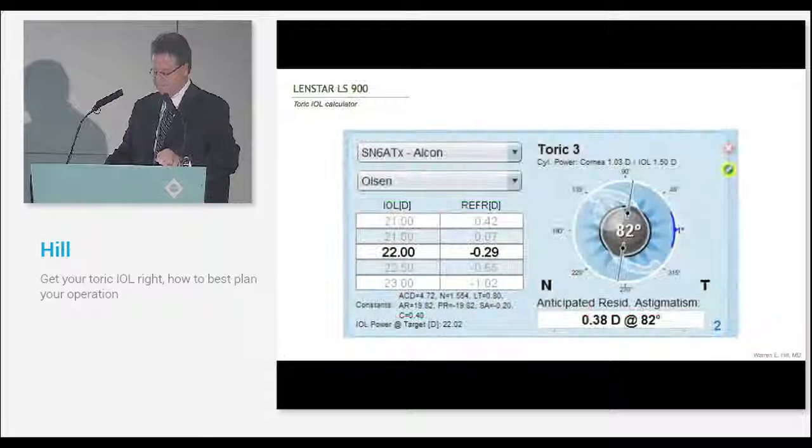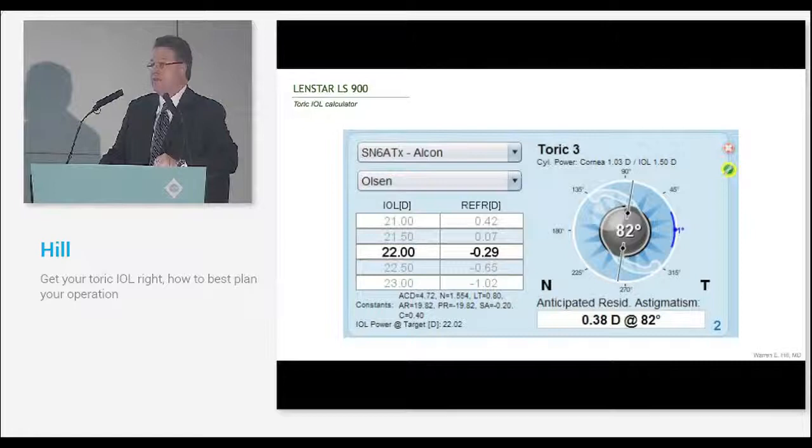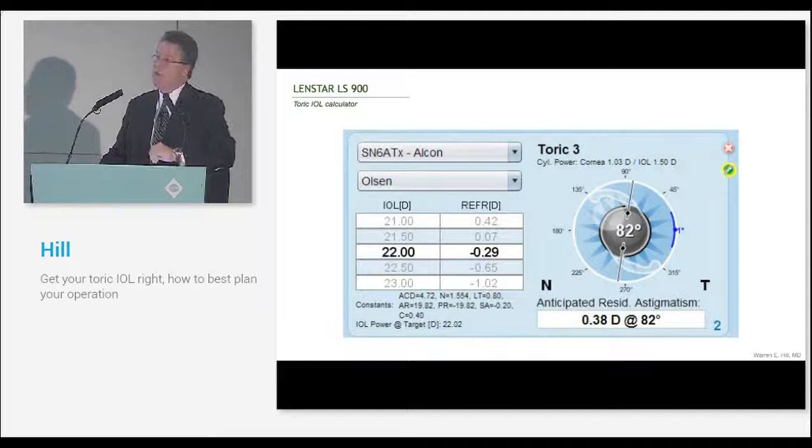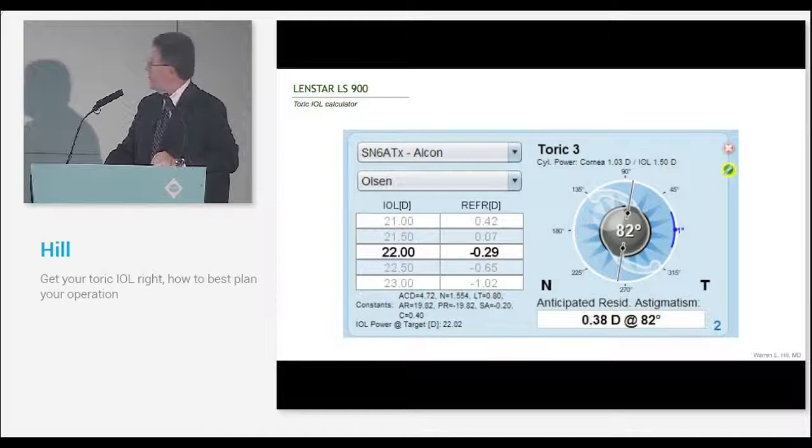This is the current form of the calculator. The nice people at Haag-Streit are going to be adding Graham Barrett's calculator. The advantage of Graham Barrett's calculator is that it also adds the posterior corneal astigmatism that all of you know about now. So that separate mental calculation doesn't have to be done. That's especially accurate for patients who have against the rule and oblique astigmatism to make sure that the lens is lined up correctly.